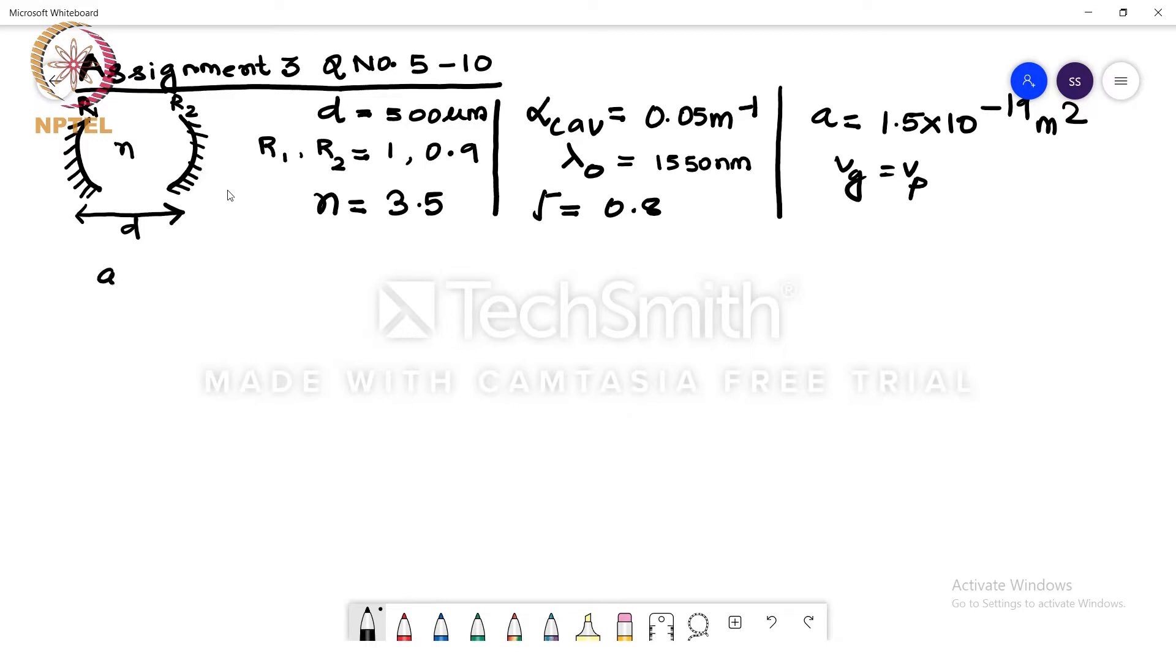So let us start with part A of the question. We need to find the mode number corresponding to the central wavelength or lambda 0 of the cavity. So we know that in a laser medium the modes are separated by FSR frequency.